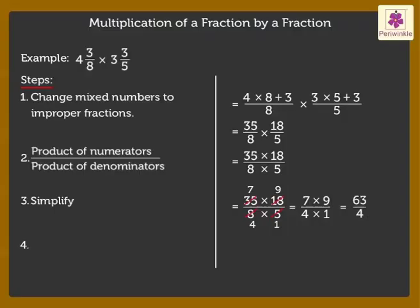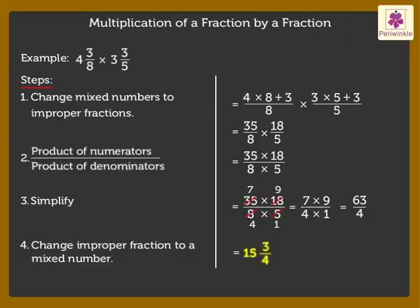Step 4 is changing the improper fraction back to a mixed number. Thus, we get the mixed number as 15 and 3 upon 4 which is the answer.